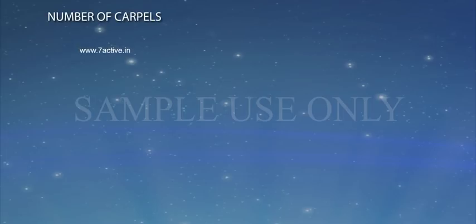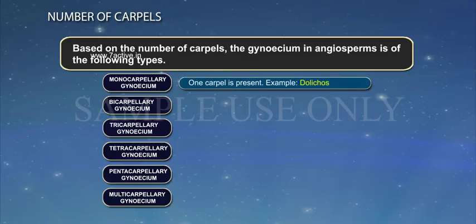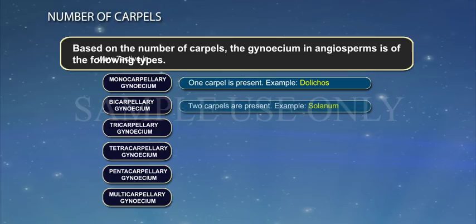Based on the number of carpels, the gynoecium in angiosperms is of the following types. Monocarpellary gynoecium: one carpel is present, example Dolichos. Bicarpellary gynoecium: two carpels are present, example Solanum.